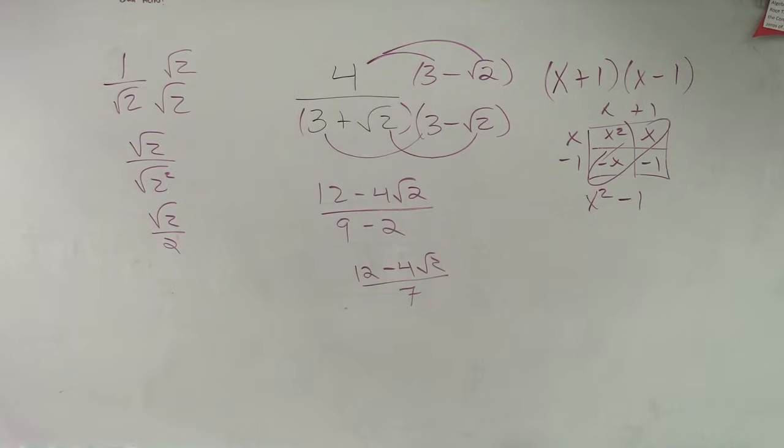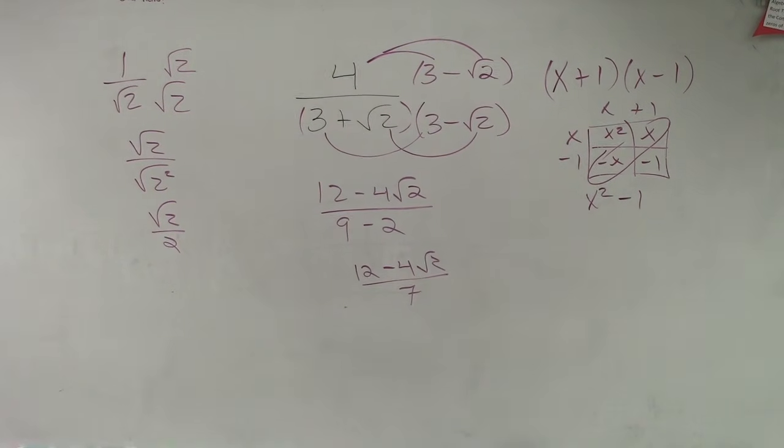Why don't you just minus 12 is 4? Because you can't, because it's 4 times the square root of 2.